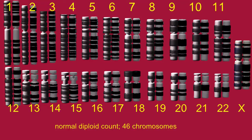A normal diploid cell has two copies of 23 chromosomes for a total of 46. A cell or an individual which possesses an extra chromosome possesses a trisomy of a specific chromosome.